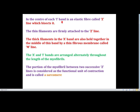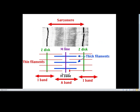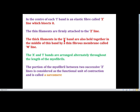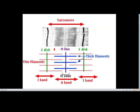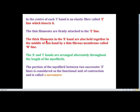The thin filaments are firmly attached to the Z line — that is the function of the Z line. Before discussing muscle contraction, we need to understand the basic structure: the thick filaments are also held together in the middle of the A band by a thin fibrous membrane called the M line. So the middle part of the thick band has a fibrous line called the M line.